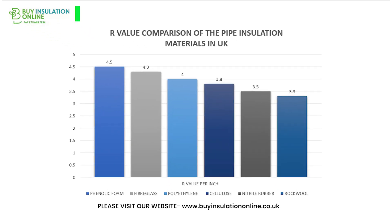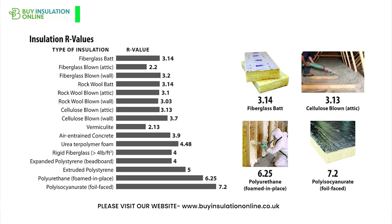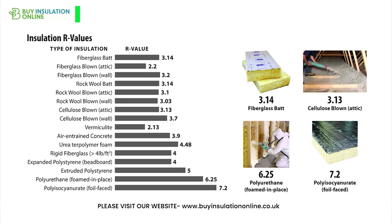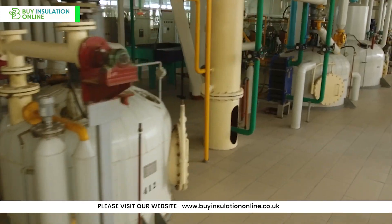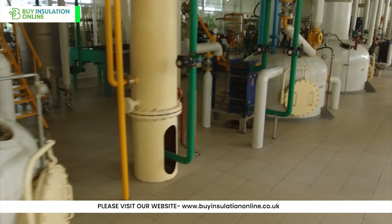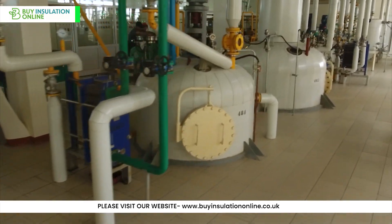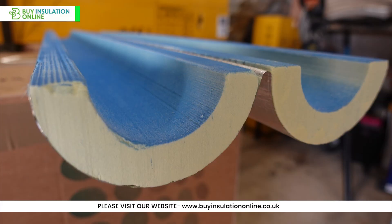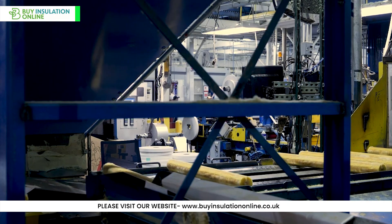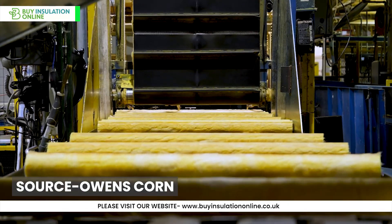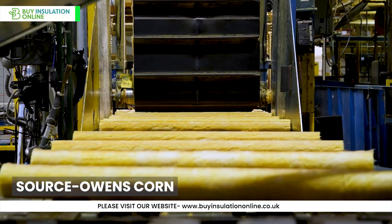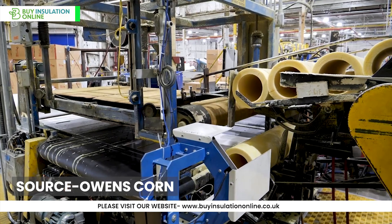This is converse to the r value, where a higher number means better insulation. However, r value is rarely used in the UK to measure pipe insulation performance. The k value of a material can be determined through laboratory testing and is often used to compare the thermal performance of different insulation materials. Manufacturers will have conducted these tests, which are verified by third parties, which allows us to know their k value.